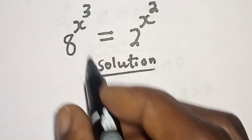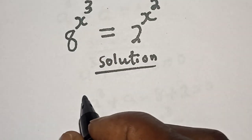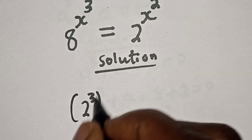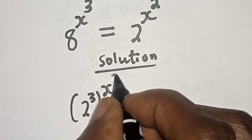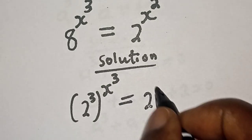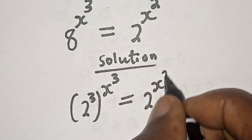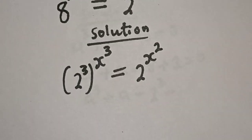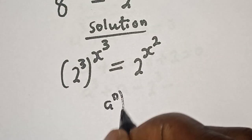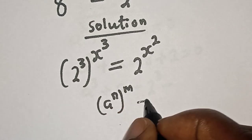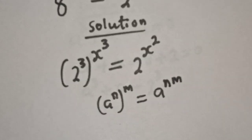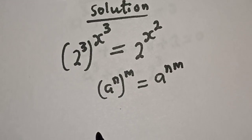We have 8 raised to power s raised to power 3, which can be written as 2 raised to power 3, to the power of s raised to power 3, is equal to 2 raised to power s squared. Take note of this rule: a raised to power n, to the power of m, is equal to a raised to power n times m.